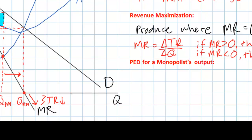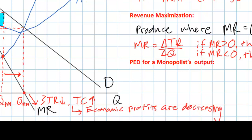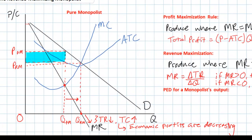A firm would never wish to produce beyond the quantity of QRM. Beyond that point the firm's total revenues would be declining, but its total costs would be increasing to produce that additional output. This means economic profits are decreasing. Even a revenue maximizing firm would not want to produce beyond QRM, since total revenue is maximized there and any output beyond that causes total revenue to decline.